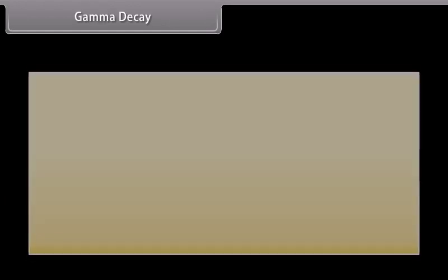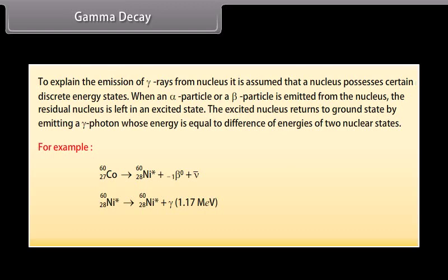Gamma decay. To explain the emission of gamma rays from nucleus, it is assumed that a nucleus possesses certain discrete energy states. When an alpha particle or a beta particle is emitted from the nucleus, the residual nucleus is left in an excited state. The excited nucleus returns to ground state by emitting a gamma photon whose energy is equal to difference of energies of two nucleus states. For example, Cobalt nucleus with mass number 60 and atomic number 27 transforms into Nickel nucleus with mass number 60 and atomic number 28 in its excited state. The excited Nickel nucleus with mass number 60 and atomic number 28 returns into ground state by emission of two successive gamma photons of energies 1.17 MeV and 1.33 MeV.